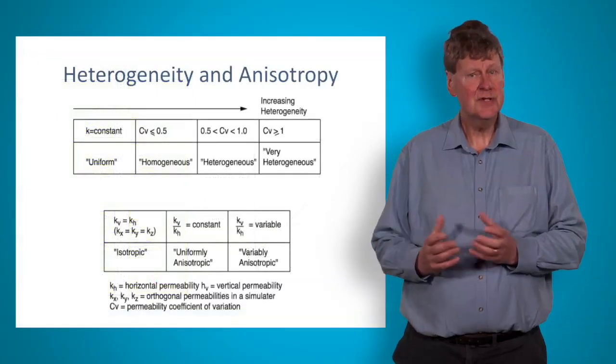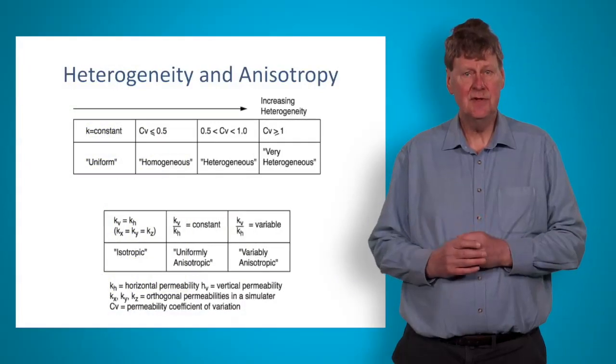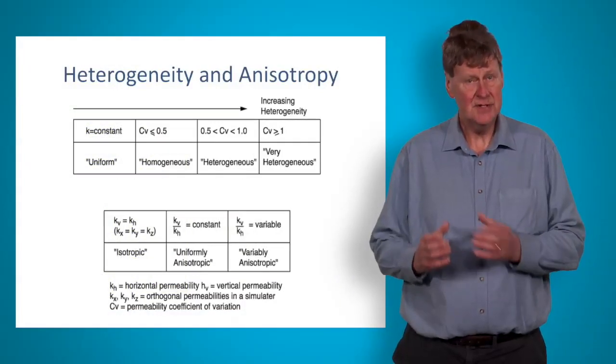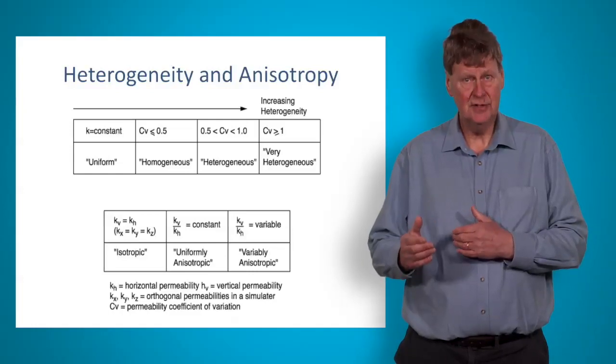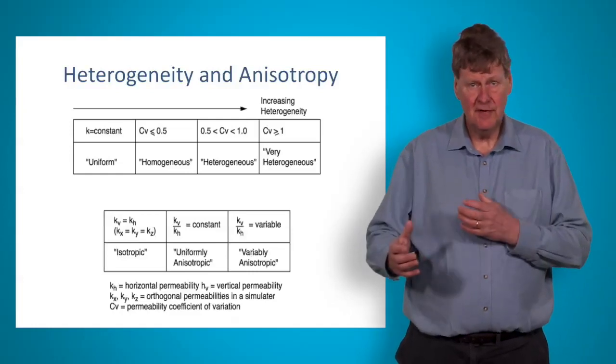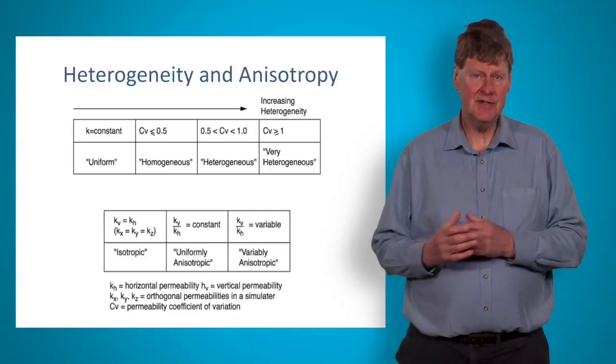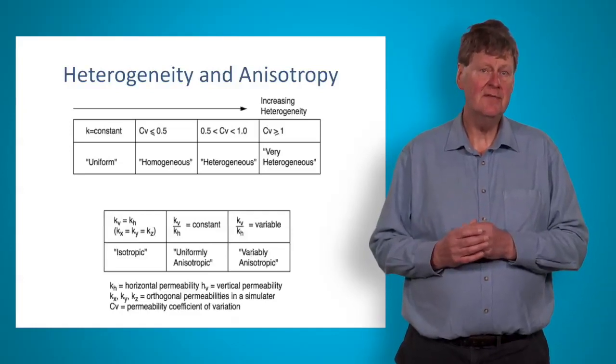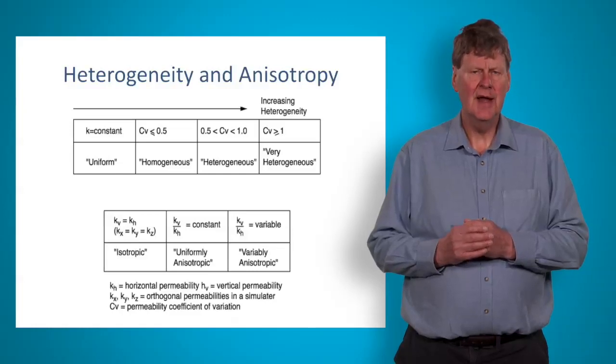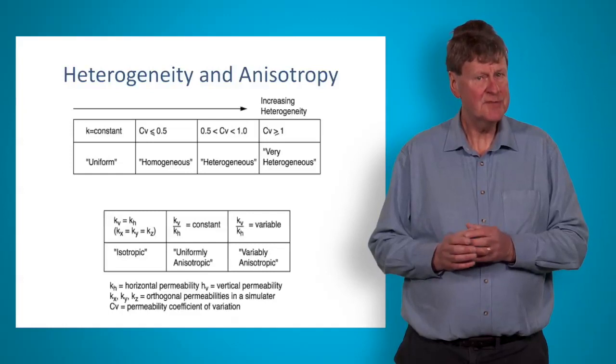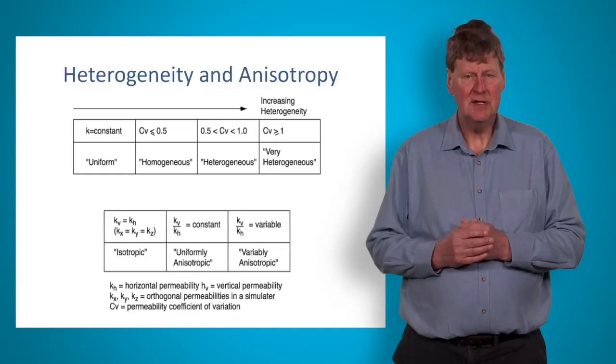So, after watching this video, it should be easier for you to understand the difference between permeability heterogeneity, which is variation at a location measured by the coefficient of variation, and anisotropy, which is variation in direction measured by the KVKH in rocks, and how difficult these properties are to capture, especially when it comes to the vertical permeability in reservoir characterization.